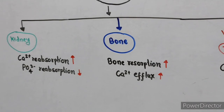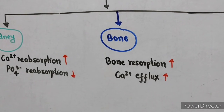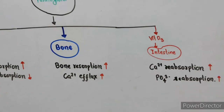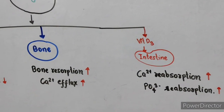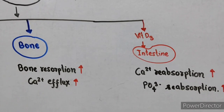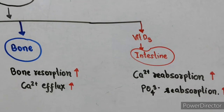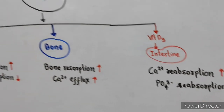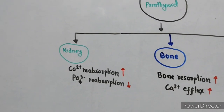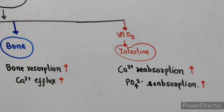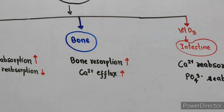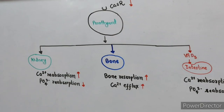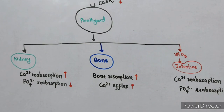In bone, parathyroid hormone increases conversion of pre-osteoclasts into osteoclasts, causing bone resorption and calcium efflux from bone into blood. PTH has an indirect effect on the intestine by activating conversion of vitamin D3 into calcitriol, the most potent vitamin D3 compound, which increases intestinal calcium and phosphate absorption. The net effect of parathyroid hormone is to increase plasma calcium and decrease plasma phosphate, since its effect to decrease phosphate reabsorption in the kidney is more potent than the phosphate increase via intestinal absorption.